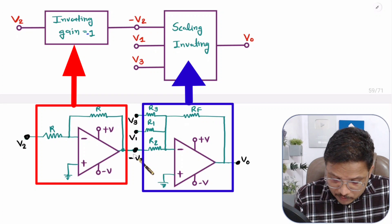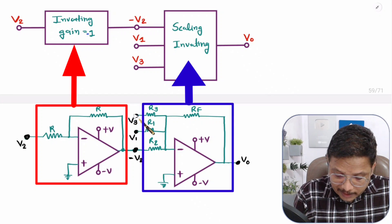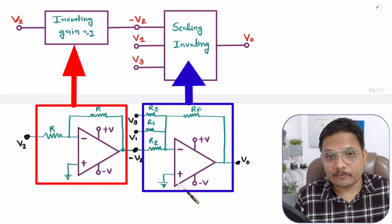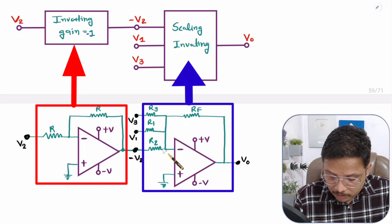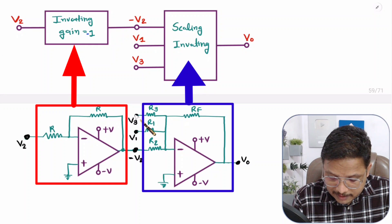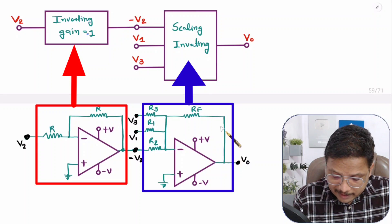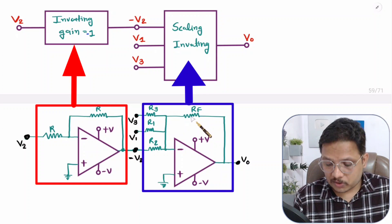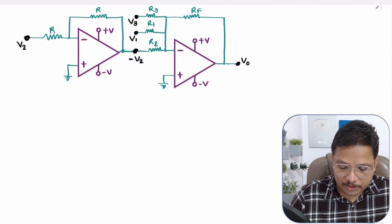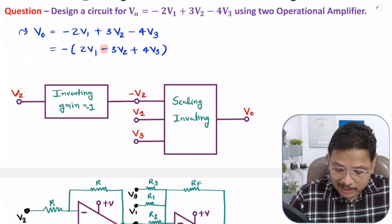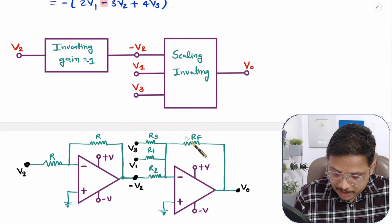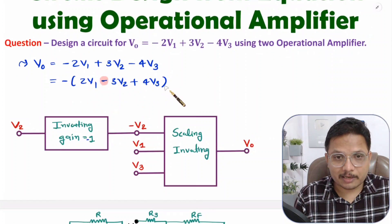Now minus V2, V1, and V3 are all fed into the scaling with inverting configuration. In this second stage, minus V2 is connected through resistance R2, V1 through resistance R1, and V3 through resistance R3, with feedback resistance Rf. I will write the generalized output equation and then assign component values to match the required equation.